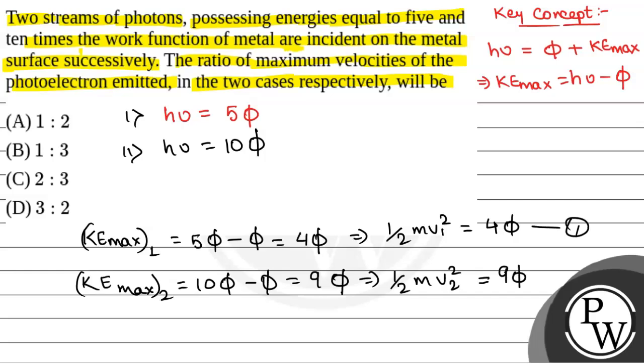So if we call this as equation 1 and this as equation 2, then equation 1 divided by 2 we will have v₁² by v₂² is equal to 4 by 9, or v1 by v2 that is equal to 2 by 3.